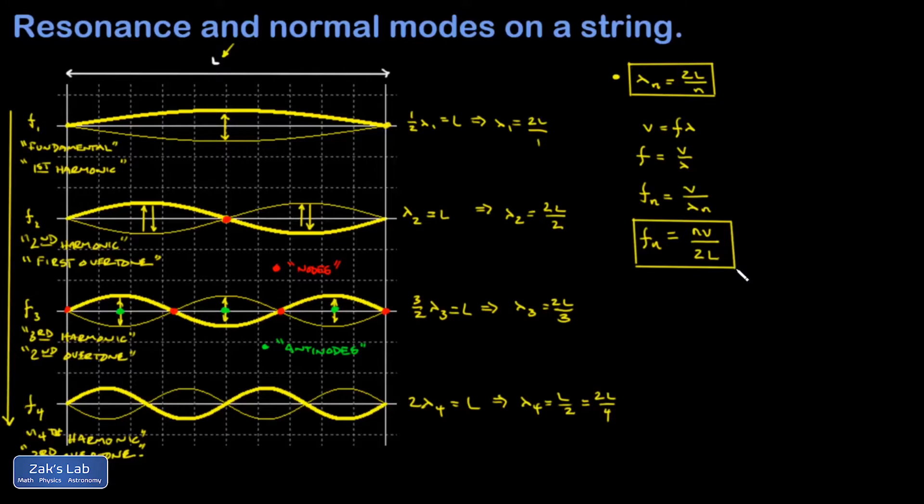That equation is sometimes useful, but not as useful as what I'm about to do. So I noticed that f one, the fundamental frequency, just plugging in n equals one into this formula, is v over two L.